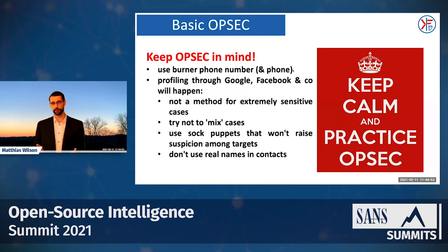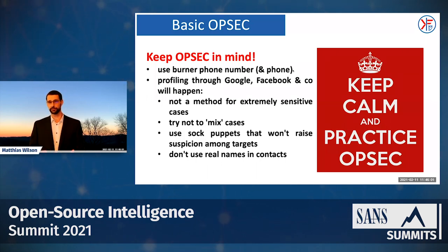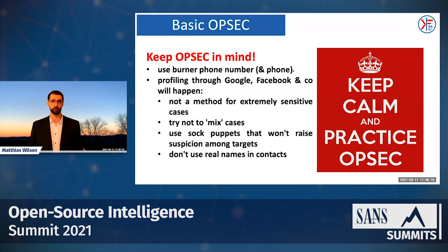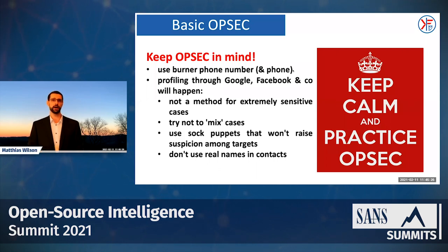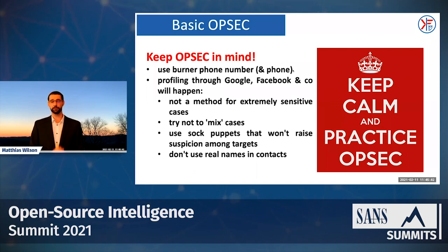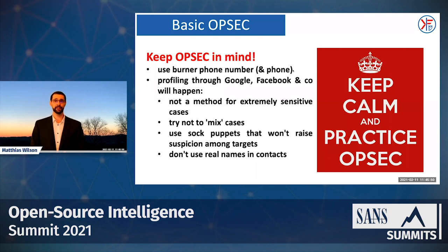Before we get started, this is very important: always keep OPSEC in mind. If you are working with a target's phone number, you should not save it in your personal phone's contacts. By allowing apps access to your contacts, you're allowing tech companies like Facebook, Google, and many others access to your contacts, and they will conduct profiling on you. In the worst case, this can lead to friend suggestions on Facebook that actually make a target aware of your investigations. Always use a burner phone and a burner SIM card or a burner VM when conducting these investigations.